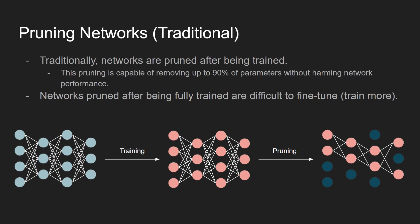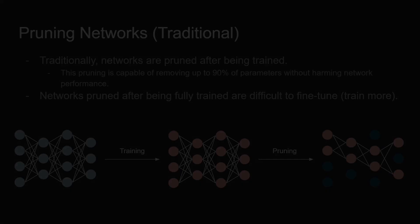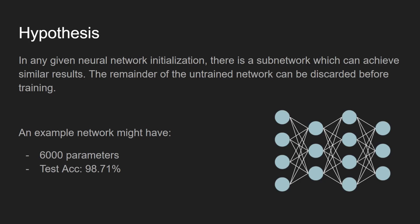The techniques used to prune networks are outside of the scope of this video, but it's important to be aware that they exist and are effective. The main idea of the lottery ticket hypothesis is that a neural network, which has been initialized with random parameters, can be pruned to a significantly smaller network before training while still achieving comparable results.